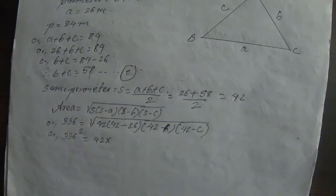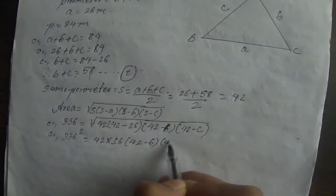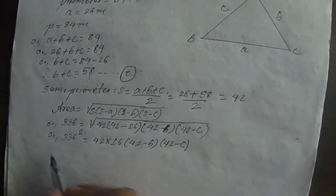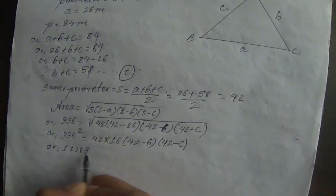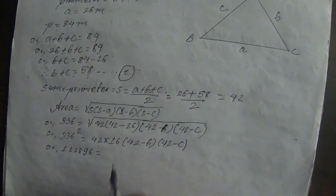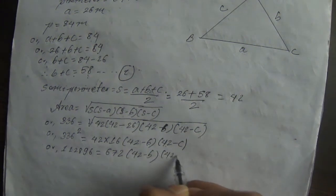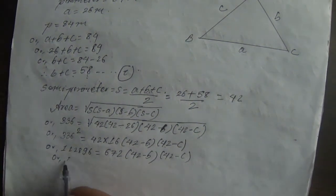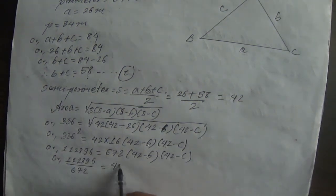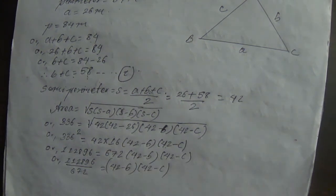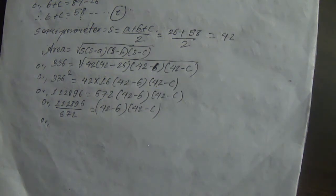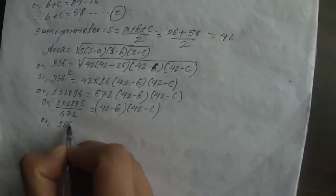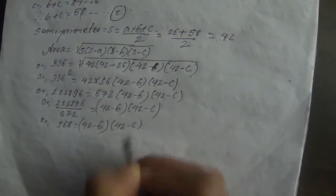So 336 squared equals 42 times 16 times (42 minus B) times (42 minus C). That gives us 112896 equals 672 times (42 minus B)(42 minus C). Dividing: 112896 divided by 672 equals 168, so (42 minus B)(42 minus C) equals 168.